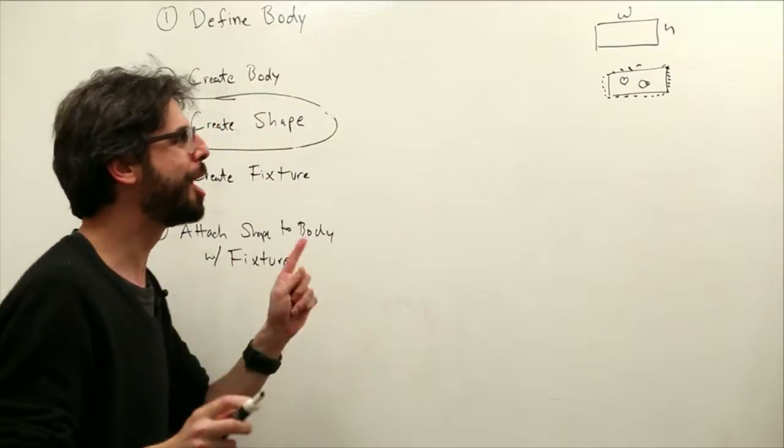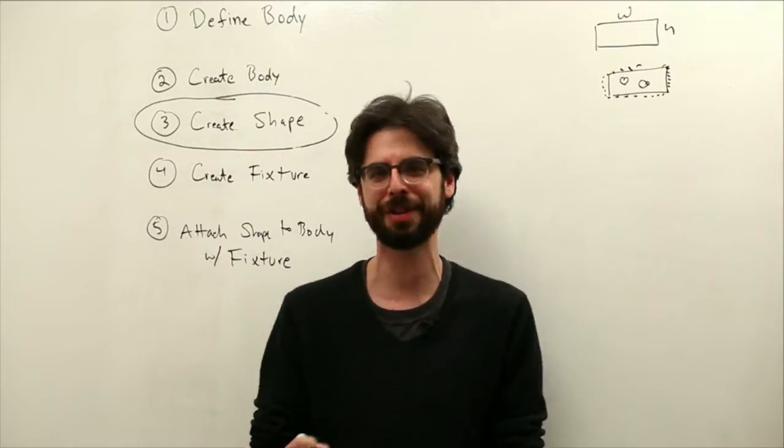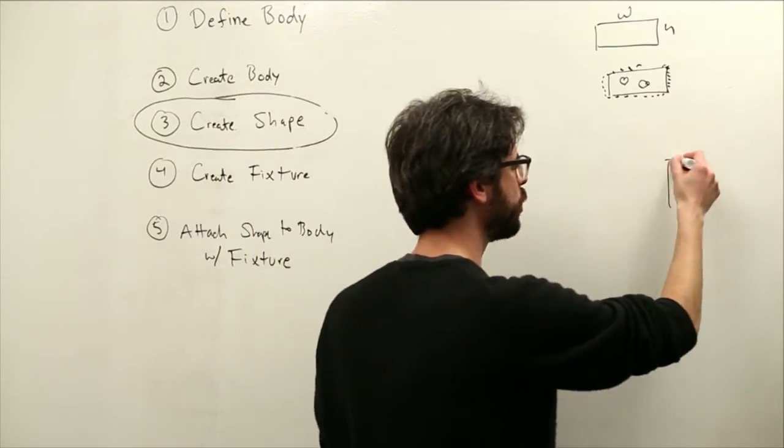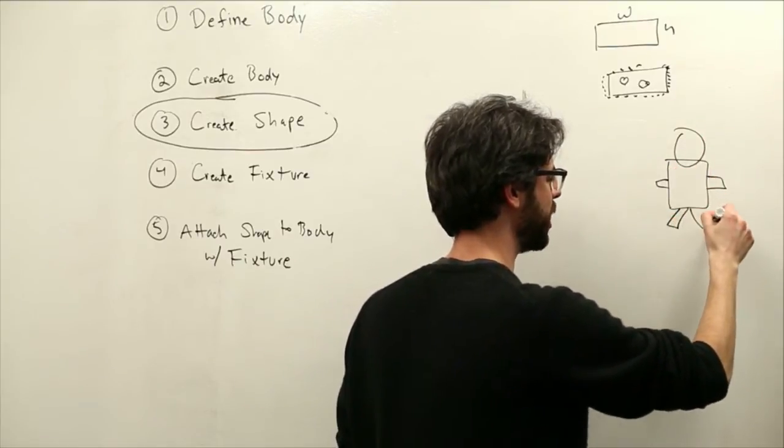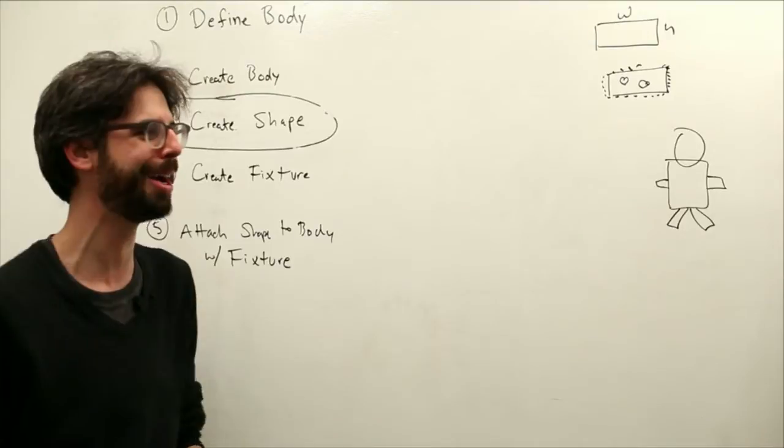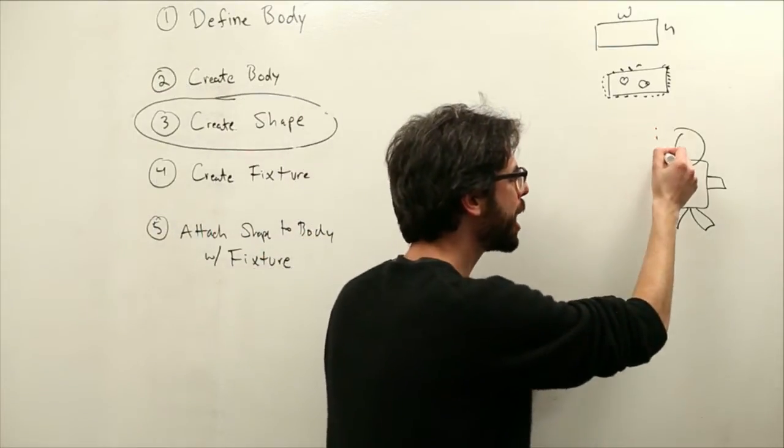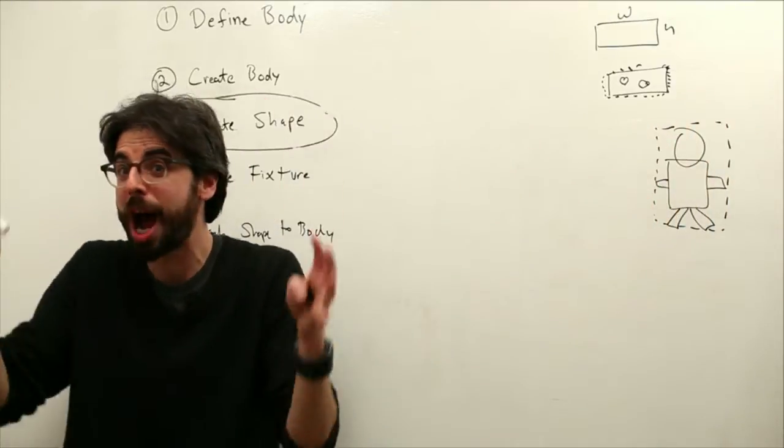But there comes a time where just a mere rectangle or a mere circle is not enough of an approximation. For example, let's just say you wanted to make some type of creature-like thing or a little alien design that looks like this. So that's sort of a terrible drawing. But how would you implement this in Box2D? Certainly we could use a bounding box approach and create a box that just approximates the design.